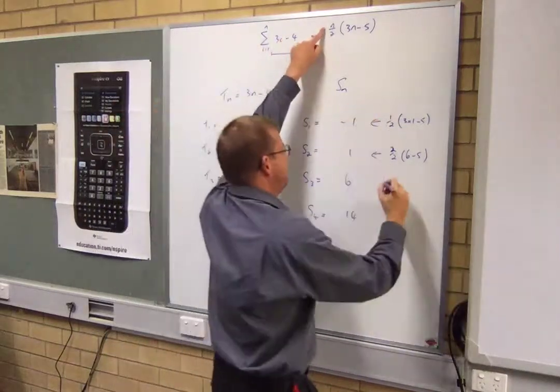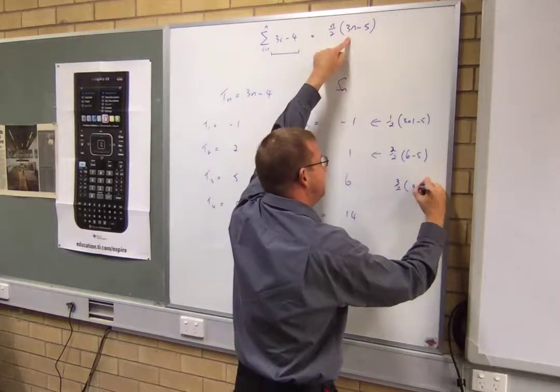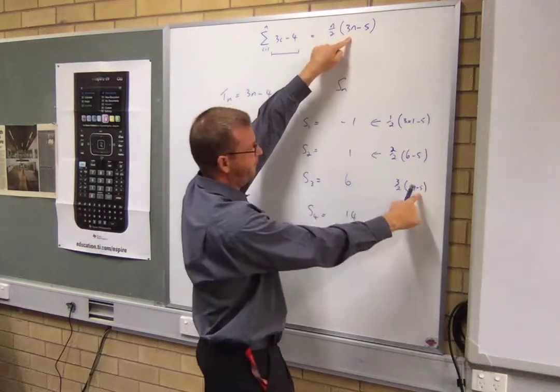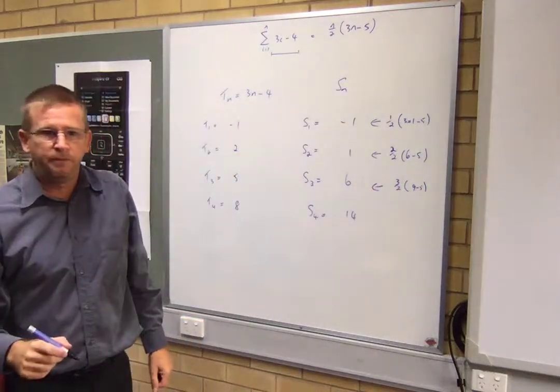Three. So n is three. Three on two. Three, three is nine minus five. Nine minus five is four. Four, three is twelve. Twelve is right away two.